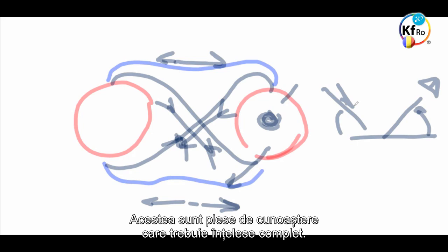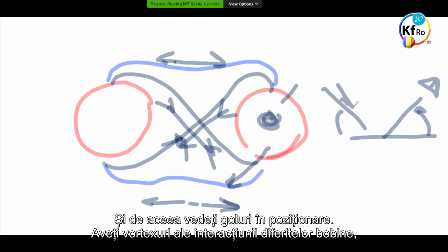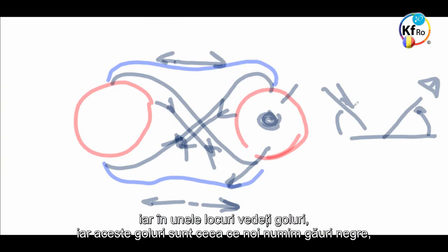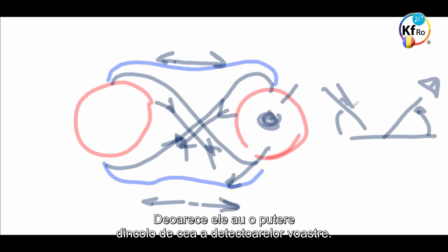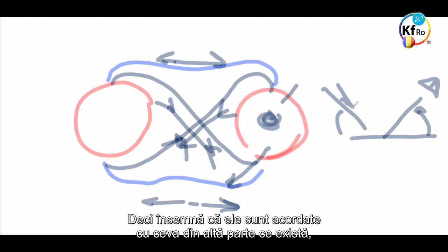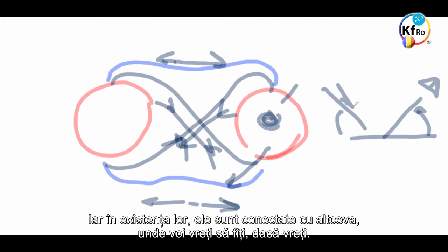And, these are pieces of the knowledge, which has to be understood, complete. And, that's why you see gaps in positions. You have vortices of interaction of different coils. And, in some places, you see gaps. These gaps, these are what you call like a black hole. You can fly through, you can use it. You look for them in certain specific conditions. Because, they have a strength, beyond your retraction strength. So, it means, they are tuned to somewhere else, that they exist. And, in existence, they are connected to something somewhere else, where you want to be, if you need it.